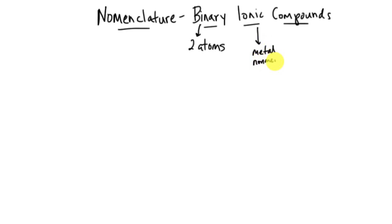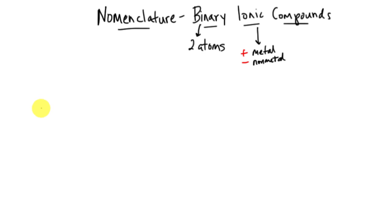More precisely, what we're going to have is a cation for the metal, because it turns into an ion — that's your positive, the cation — and an anion for the nonmetal. Those are the two parts for every ionic compound we have, whether it's binary or not.